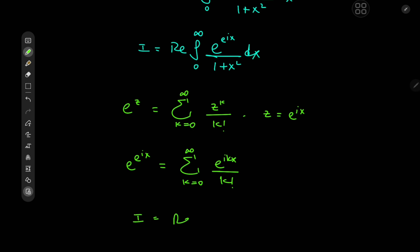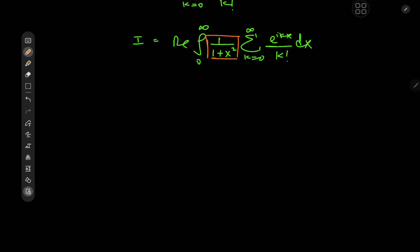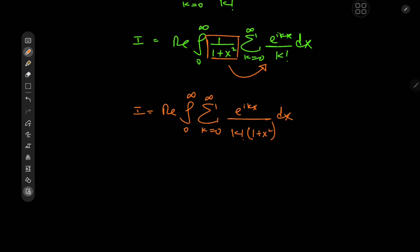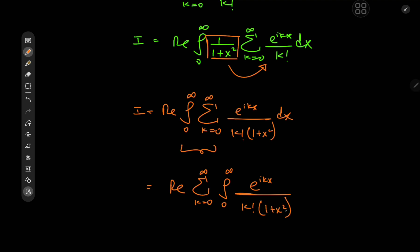So I equals the real part of the integral from zero to infinity of 1 over 1 plus x squared, times the sum over k from zero to infinity of e to the i·k·x divided by k factorial, dx. The 1/(1+x²) factor is independent of the index variable k, so we can take it inside the summation. We then switch the order of integration and summation to get the real part of the sum over k from zero to infinity of the integral from zero to infinity of e to the i·k·x divided by k factorial times (1 plus x squared), dx.